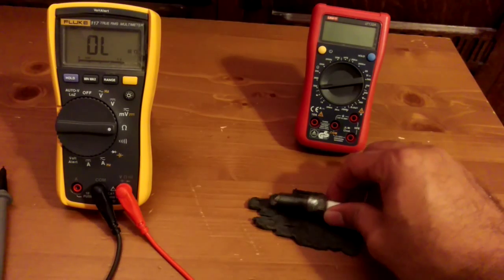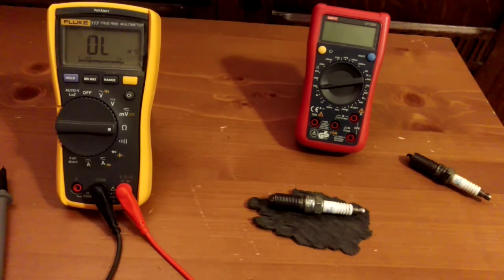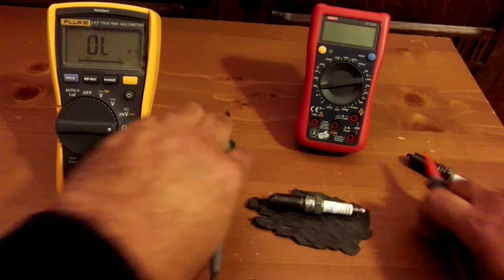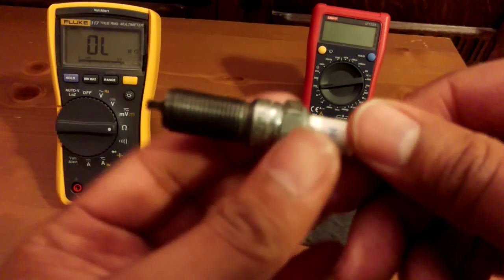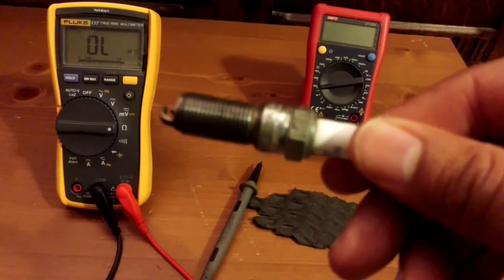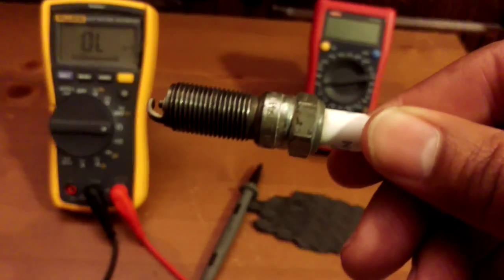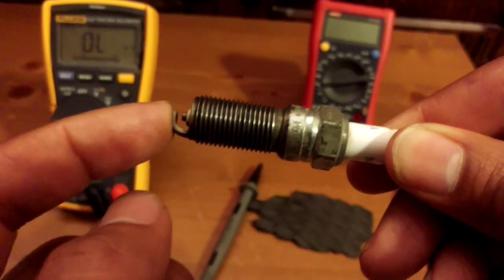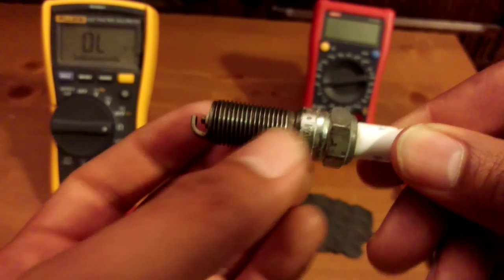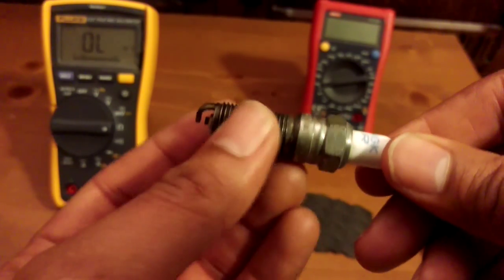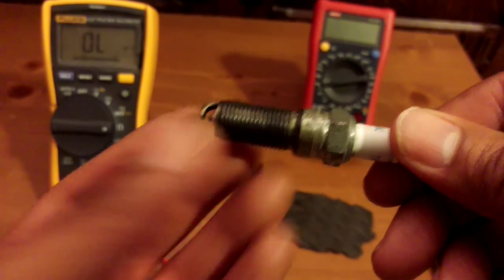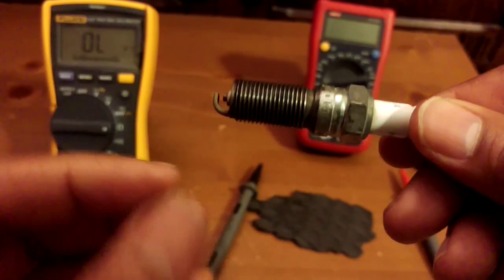That's the conductivity on the live side sorted. What I want to do now is test the conductivity on the ground side. The ground side is basically all of the metal body of the spark plug, so it's the nut, the body, all the threaded parts, all the way down to the spark plug tip. Because it's one piece of metal, you're looking for a very low figure.